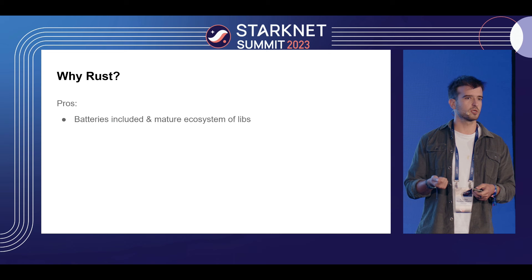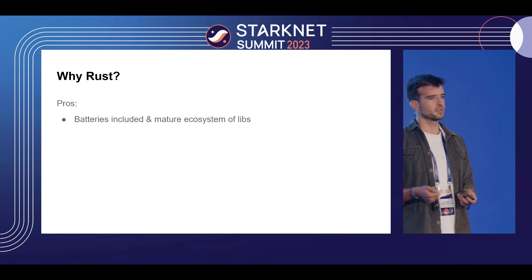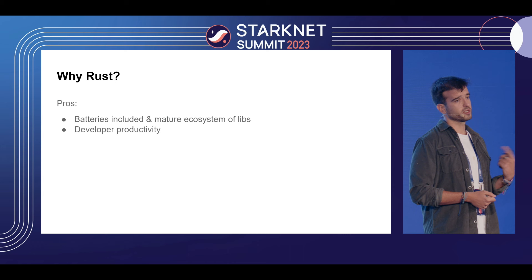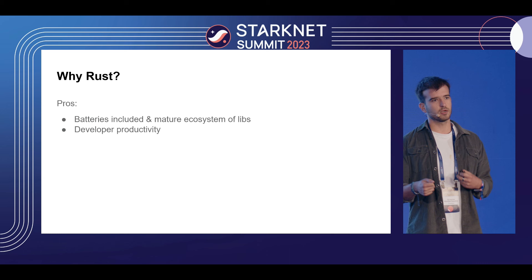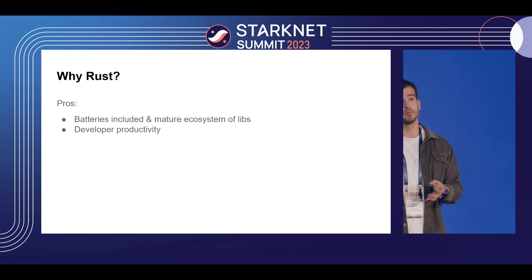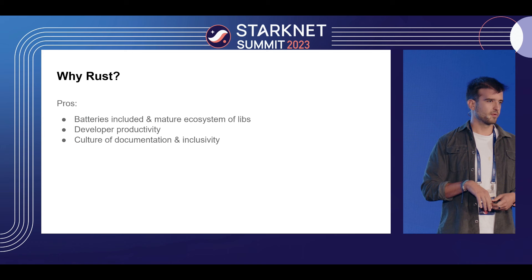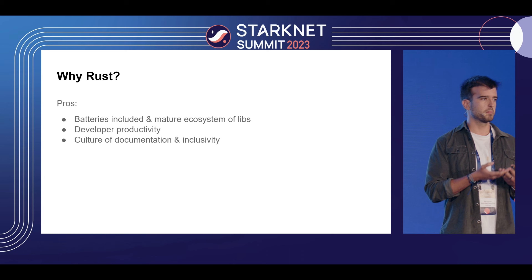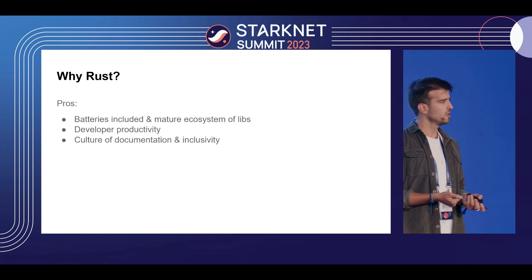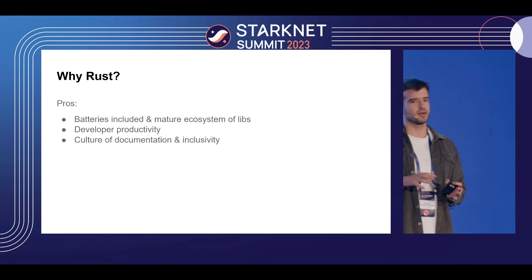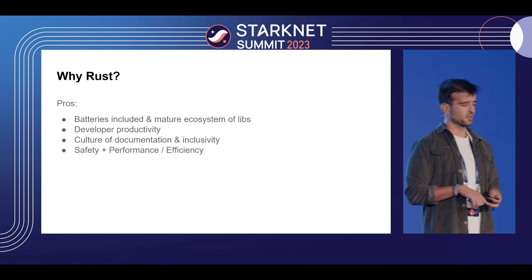Rust gives you a very big ecosystem of libraries that are well tested and well documented. This is important for production because you cannot deal with 0.x ecosystems — they're fundamentally unstable. There's also developer productivity, which comes at a cost we'll discuss. Developers are very productive in Rust because the Rust compiler is a very serious teacher — it beats you into shape, but after a while it prevents you from making many common mistakes, enabled by the borrow checker. The culture of documentation and inclusivity means nothing is considered too hard.